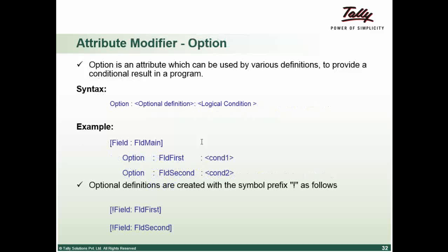Then we have option. And option helps us. Is an attribute which can be used by various definitions, across all the definitions actually. That's menu, form, parts, line, key, field, import file, import object. So all the definitions can use this.